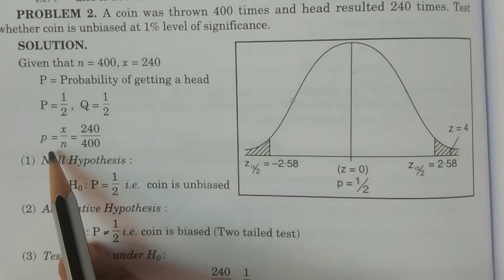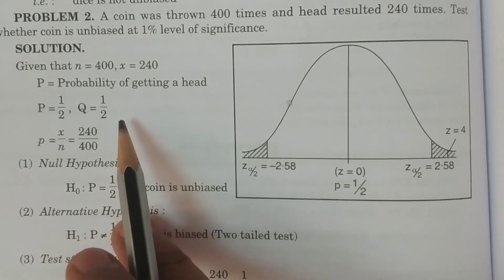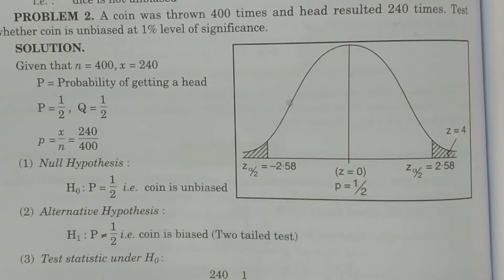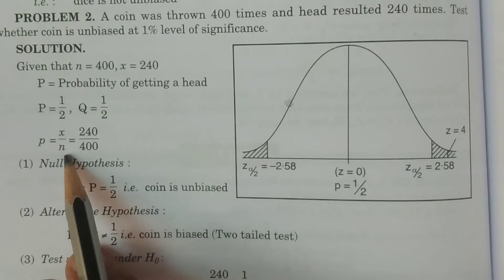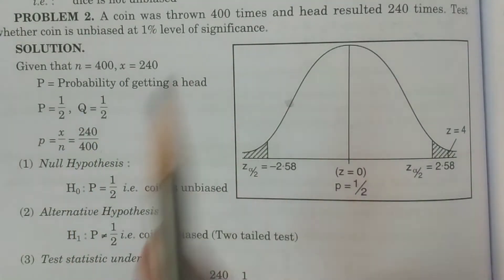Small p is the sample proportion of successes, calculated as x by n, which is 240 by 400.